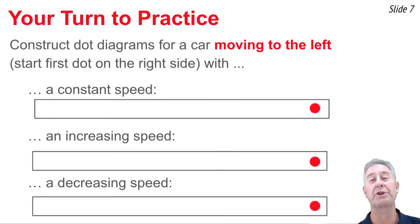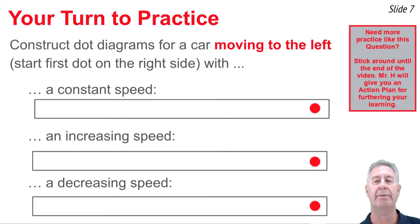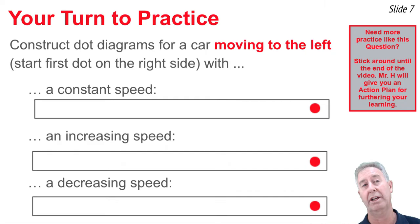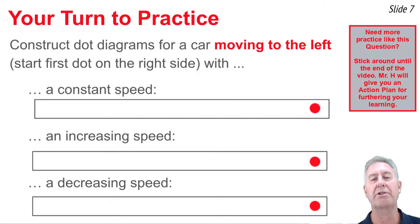Now it's your turn to practice. We've seen moving-to-the-right dot diagrams; now we're going to practice a moving-to-the-left dot diagram. In the three diagrams here, the dot starts on the right side, and the motion will be from that right side of the screen towards the left. Draw a dot diagram for a constant speed, an increasing speed, and a decreasing speed motion. Pause the video right now and draw the dots or at least think it through, then play the video to see if you got it right.